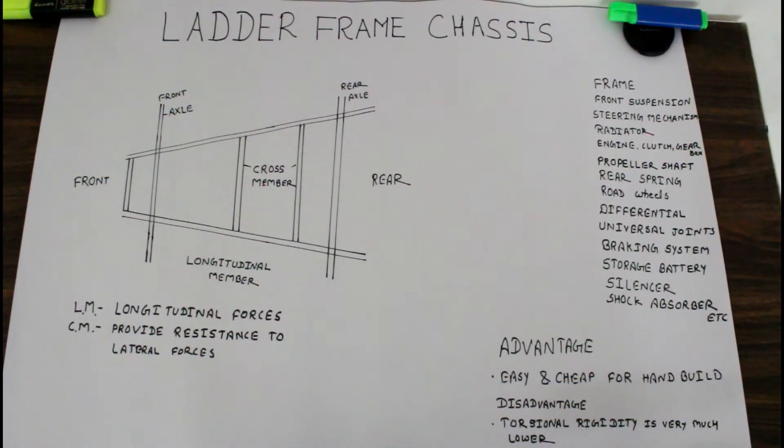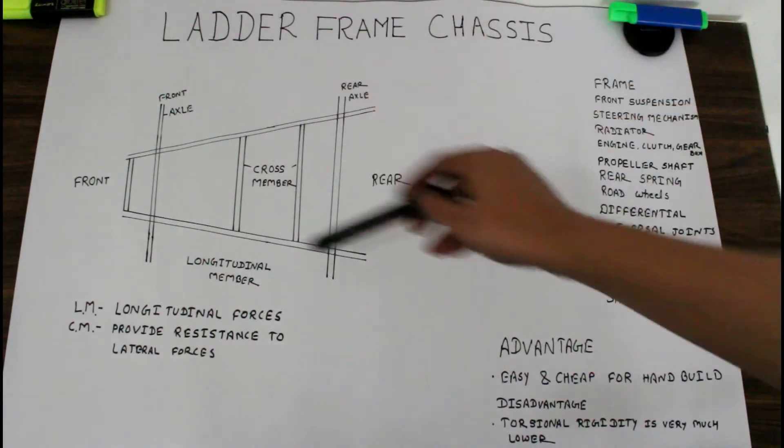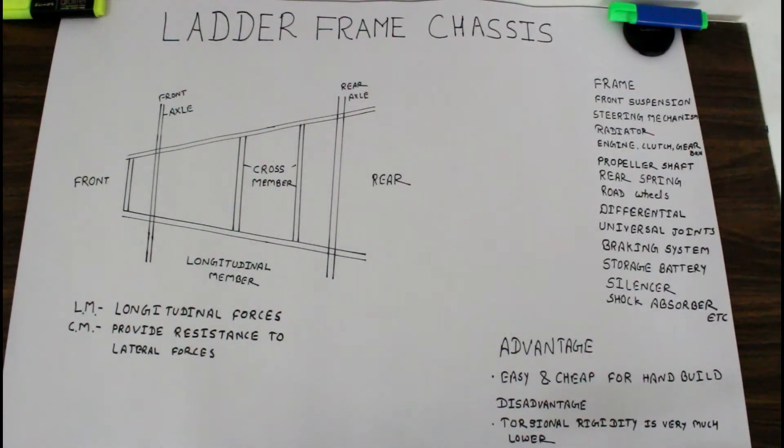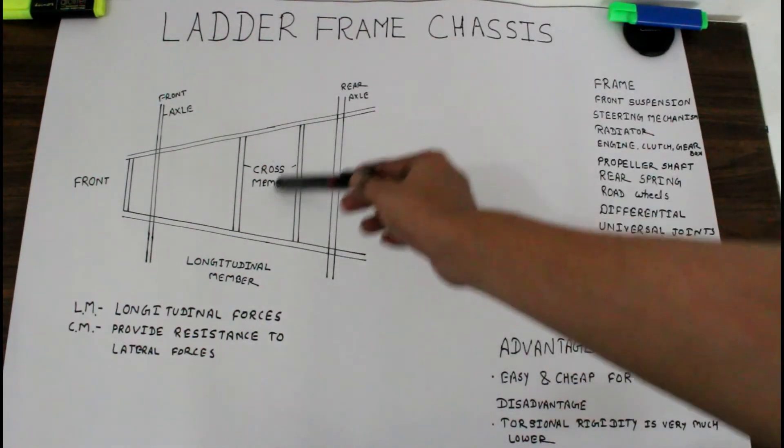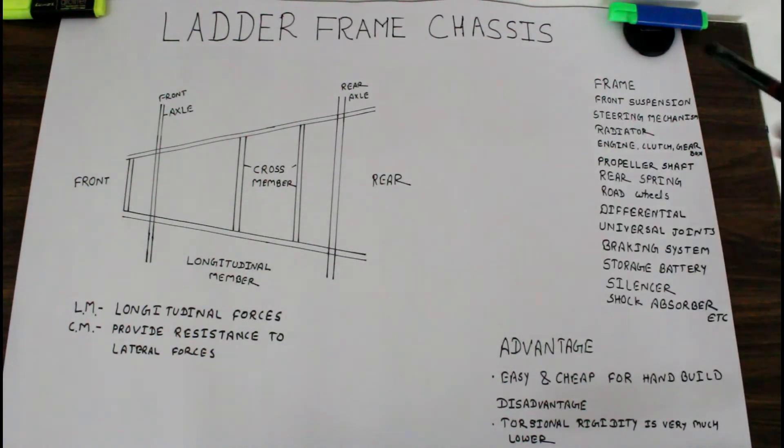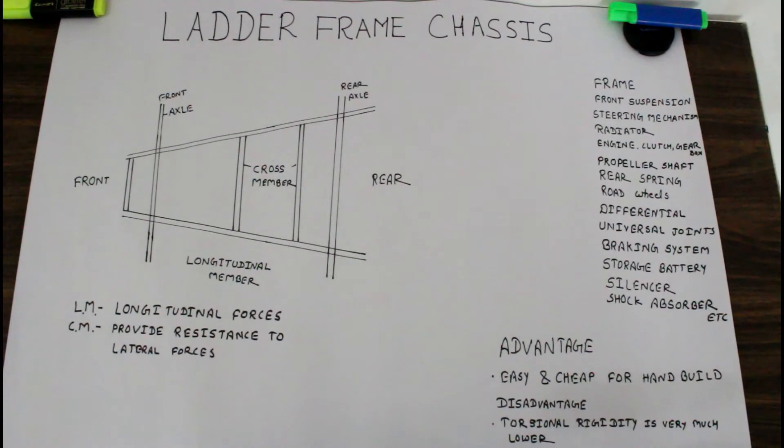The first commercial vehicle is made with this frame chassis. Any mechanical object we learned before in our automobile can be fitted on this ladder frame chassis, like the upper body of a vehicle.